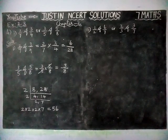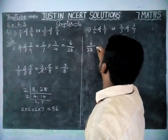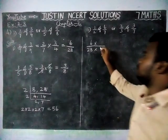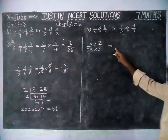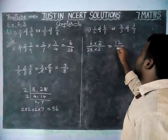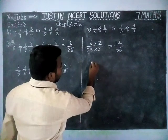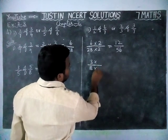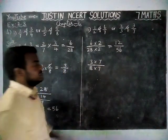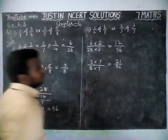Now we have to convert 6/28 into an equivalent fraction with denominator 56. We multiply 28 by 2 to get 56, so we also multiply 6 by 2 to get 12/56. For the next number, 3/8: we multiply 8 by 7 to get 56, so we multiply 3 by 7 to get 21. We are now getting 56 as denominator, giving 21/56. Now we have common denominators: 12/56 and 21/56.